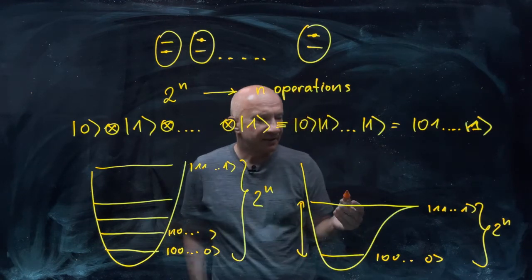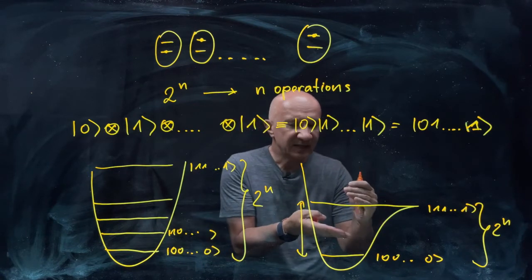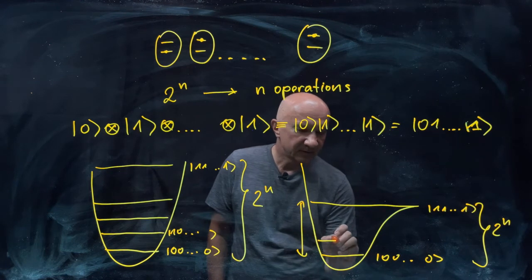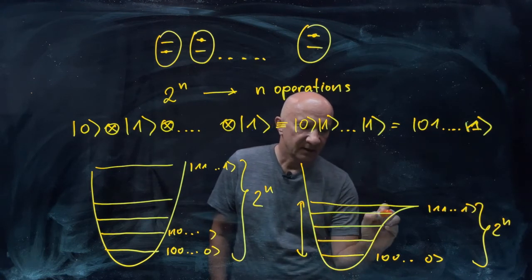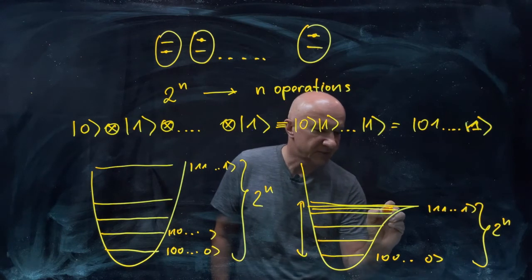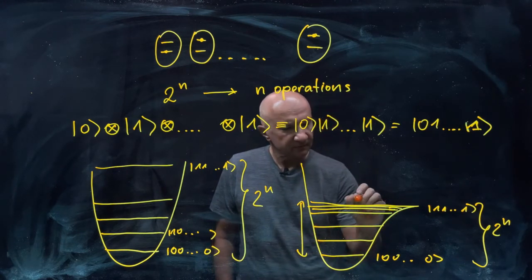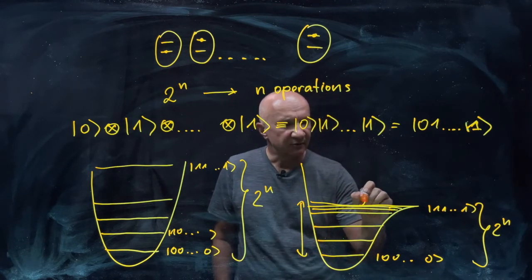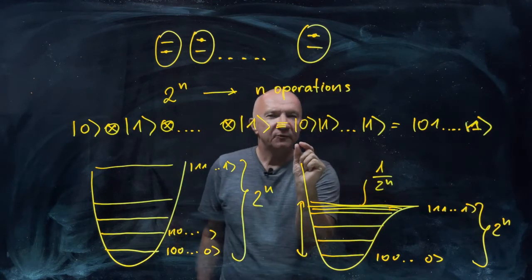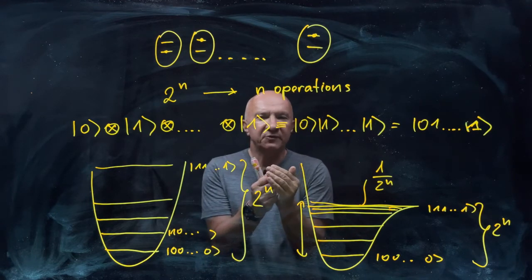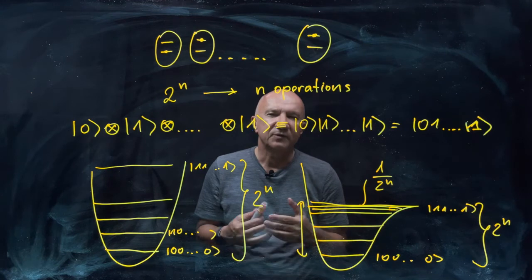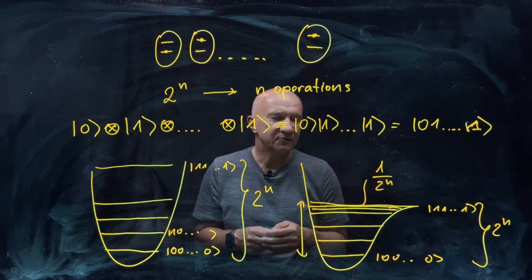Well, that's certainly true. But if you want to squeeze 2 to the n states into this energy gap, at some point, it may just look like this. There will be an enormous congestion of those energy levels here. And the energy separation at some point will just go like 1 over 2 to the n. So that means that you will have to operate with a precision that goes like 1 over 2 to the n, with exponential precision, which is also not good.